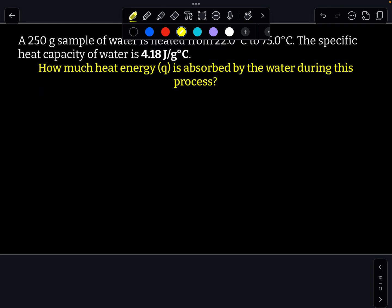So this first question here says, a 250 gram sample of water is heated from 22 degrees Celsius to 75 degrees Celsius. The specific heat capacity of water is 4.18 joules per grams degrees Celsius. How much heat energy, or q, is absorbed by the water during this process?